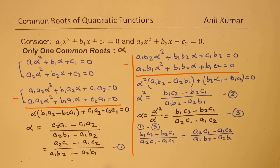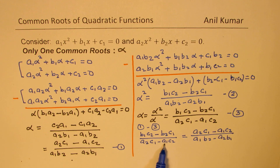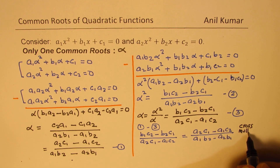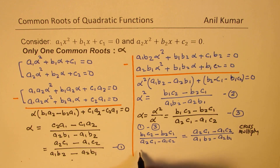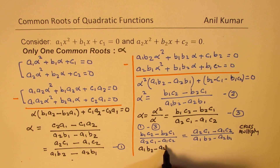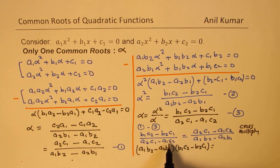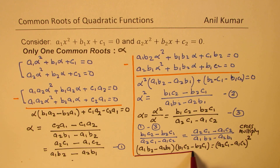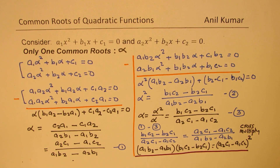Cross-multiplying these two expressions, we get (a1b2 - a2b1) times (b1c2 - b2c1) equals (a2c1 - a1c2) whole squared. This is a very important formula to solve questions based on only one common root. Note that the right-hand side is a perfect square, which is another key condition to remember.